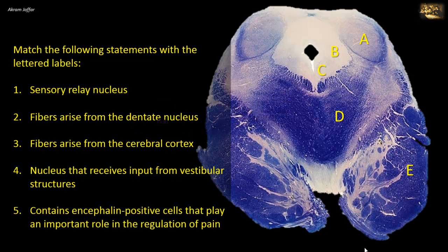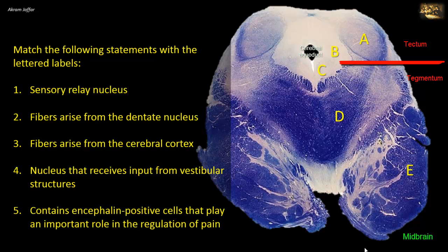Match the following statements with the lettered labels. This is a section of the midbrain. You can see the narrow cerebral aqueduct, which is the cavity of the midbrain. Also note the tectum with colliculi, located posteriorly. Anteriorly, you can identify the longitudinally running fibers forming the crus cerebri, or basis pedunculi, in E.